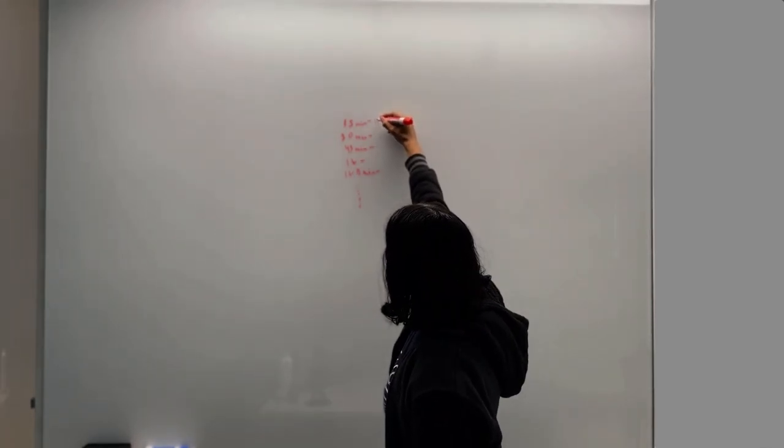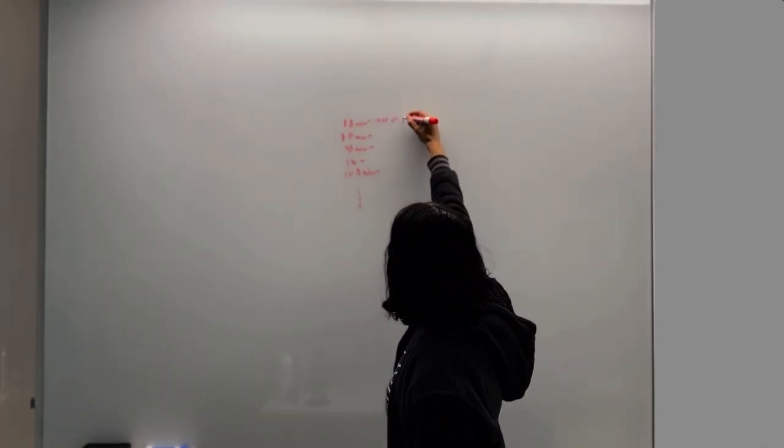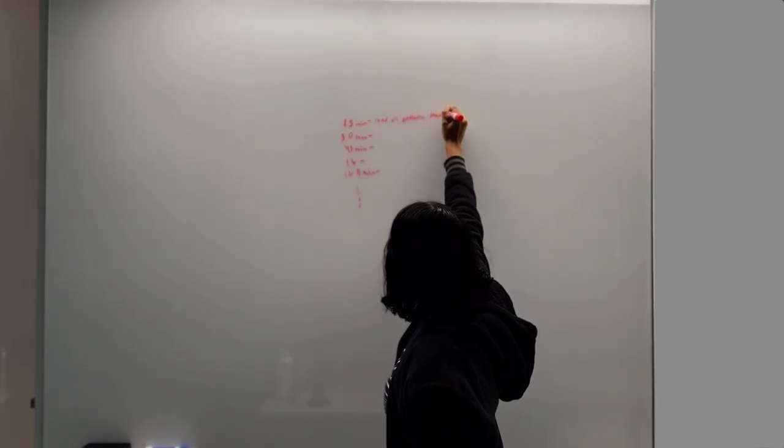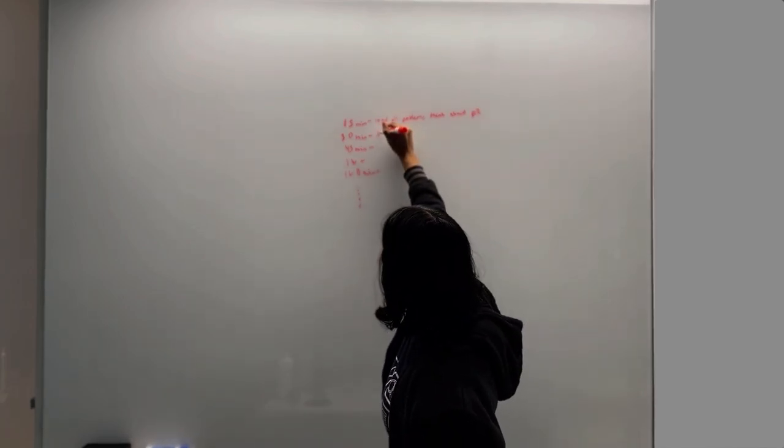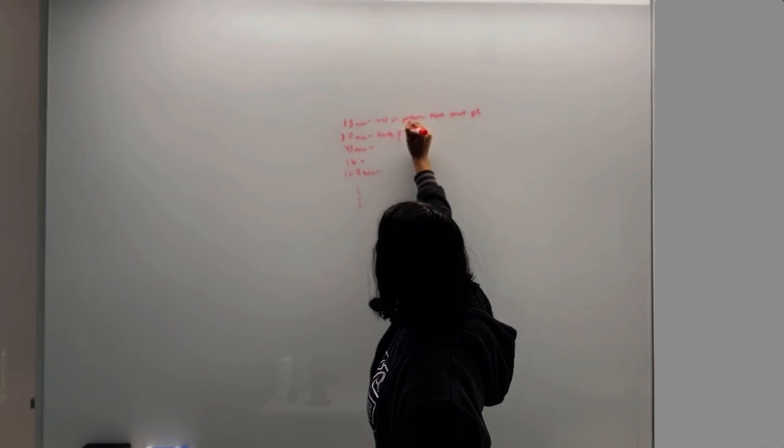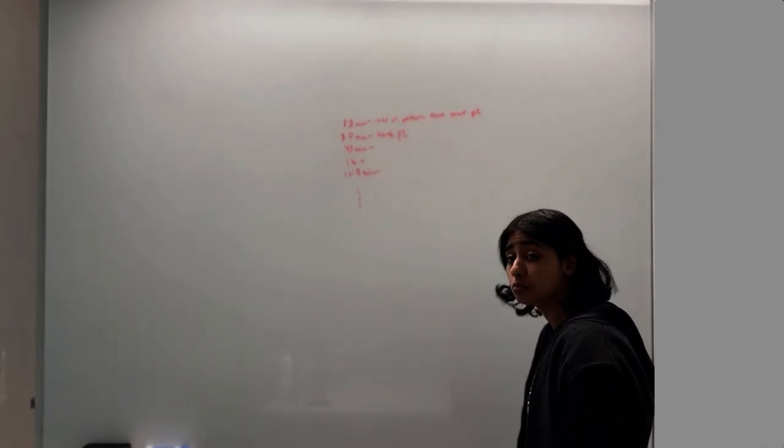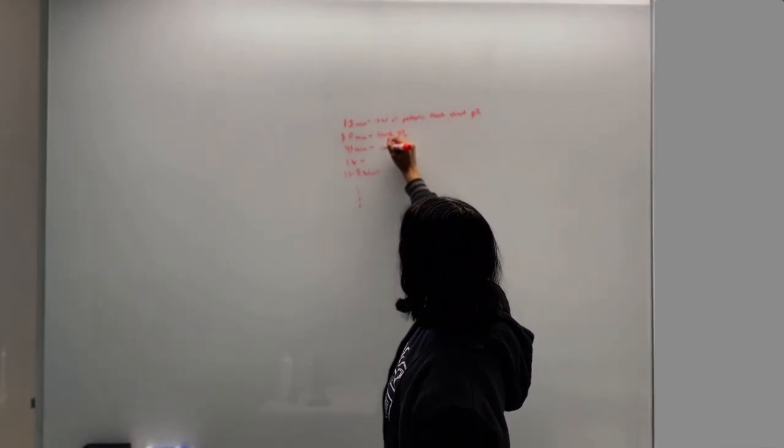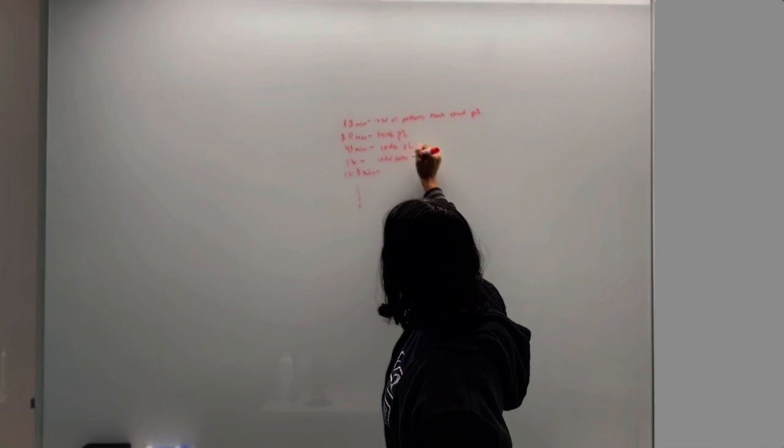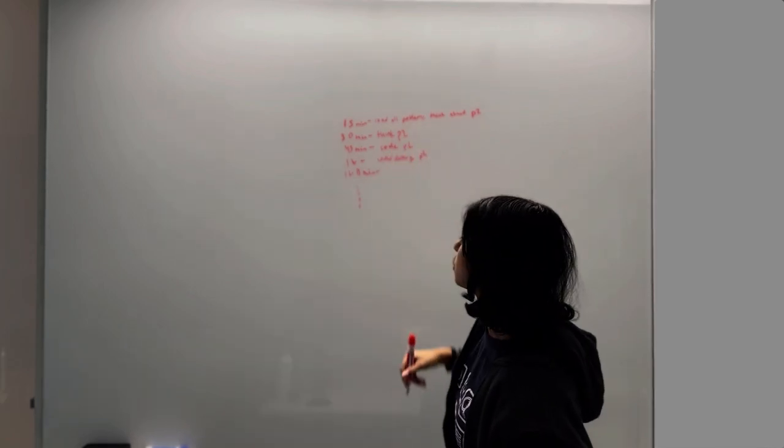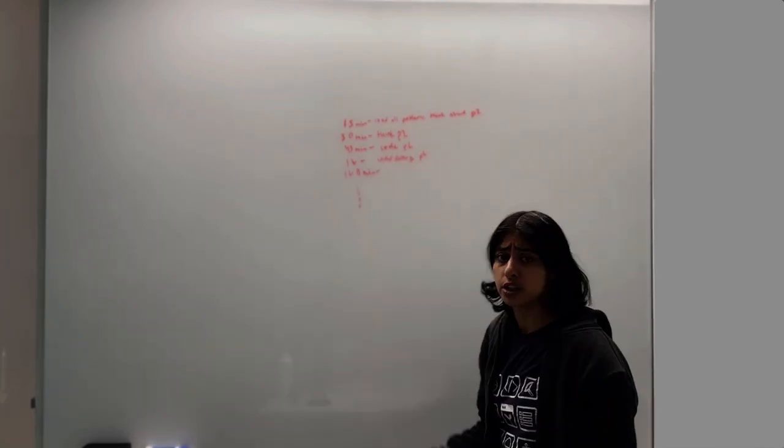And at every 15-minute period, we're going to stop and write down what we did for the previous 15 minutes. So this might be 'read all problems,' 'think about P2.' It's pretty short. This might be 'think about P2.' Here it might be 'code P2.' 'Code slash debug.' And so on. Just a couple phrases or words here and there.